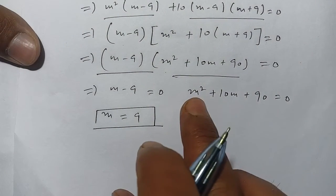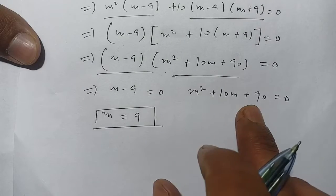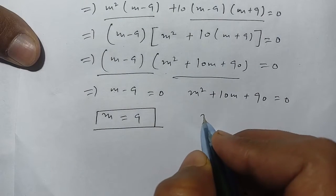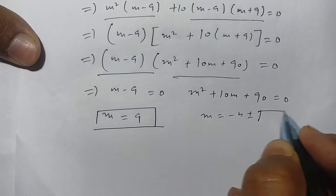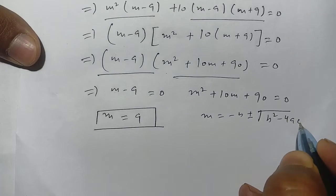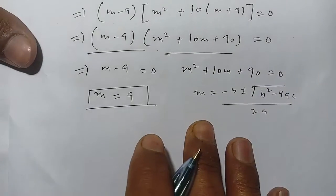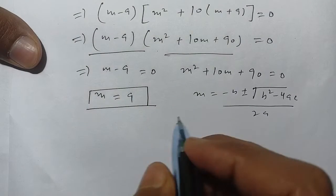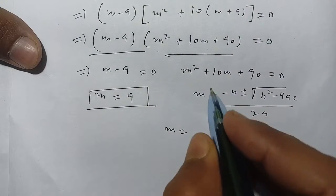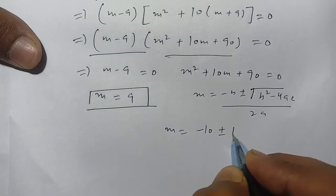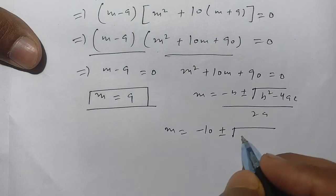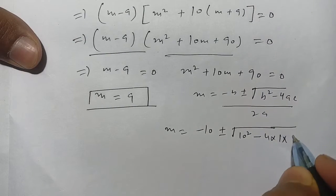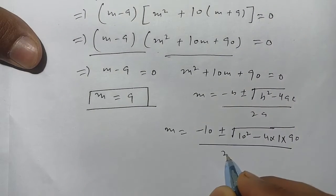The second expression is a quadratic equation. We solve it using the quadratic formula: m = (-b ± √(b² - 4ac)) / 2a, where a = 1, b = 10, and c = 90.